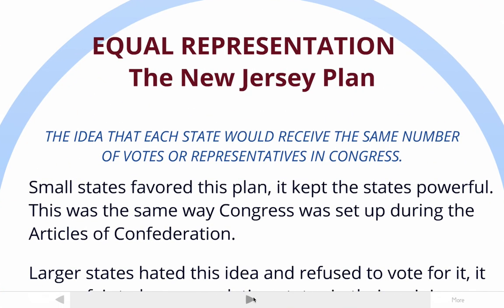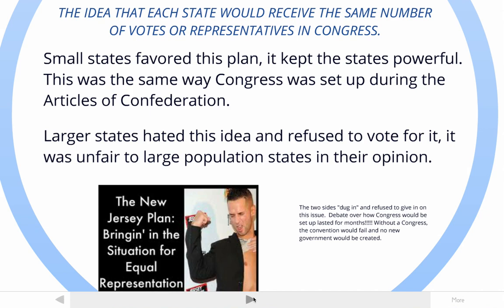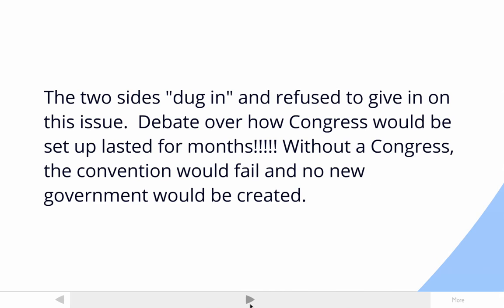Moving on to equal representation, which was called the New Jersey Plan. The New Jersey delegates put this plan forward because they were a smaller state. The New Jersey Plan proposed that each state would receive the same number of votes, regardless of population. Small states favored this plan because it kept all states powerful with an equal say. This was also the same way Congress was set up during the Articles of Confederation, so it wasn't anything new. Larger states hated this idea and refused to vote for it. The two sides dug in — proportional vs. equal, New Jersey Plan vs. Virginia Plan — and this issue of representation in Congress threatened to destroy the convention. People almost left and went home because they couldn't solve this issue.